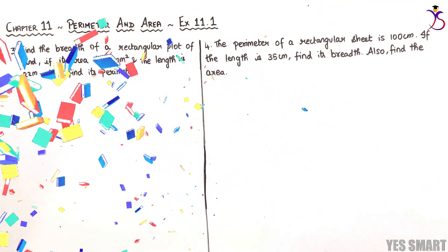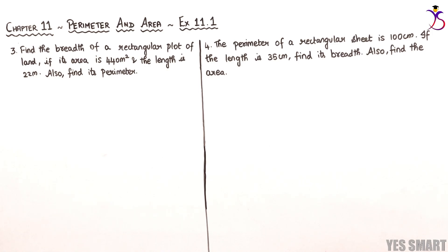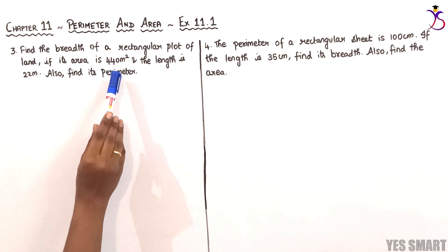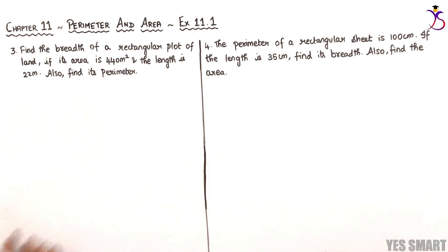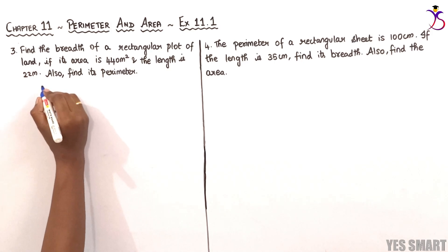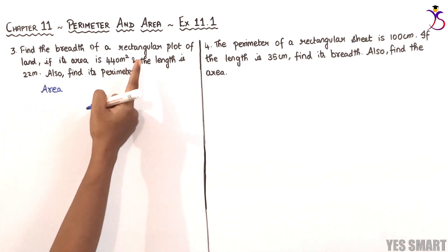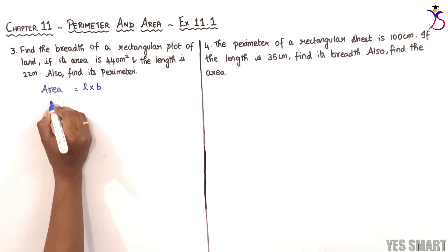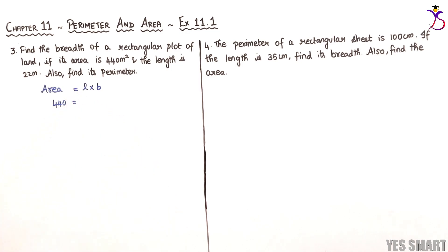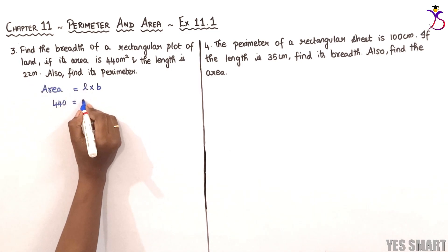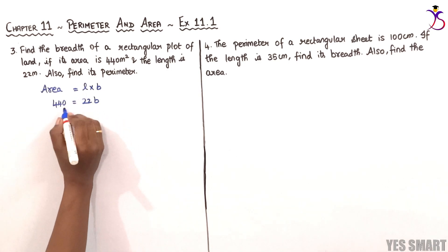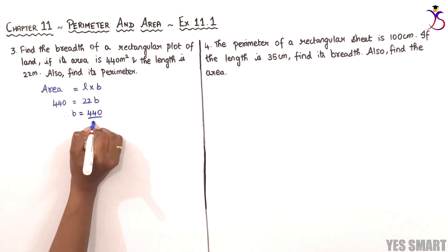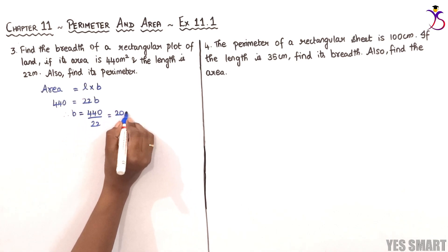Now let's discuss the third sum: find the breadth of a rectangular plot of land. Its area is 440 meter square and the length is 22 meters. Area equals length into breadth. So 440 equals 22 into B. When 22 is transposed it becomes division. Therefore breadth equals 440 divided by 22, which gives us 20. So breadth equals 20 meters.